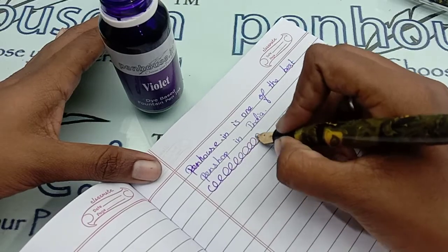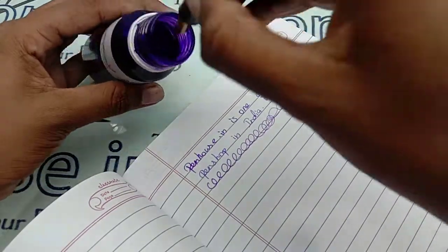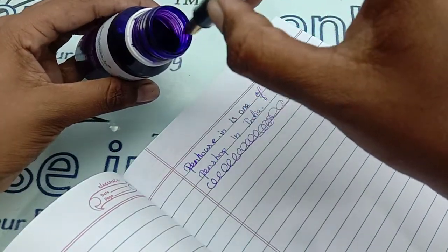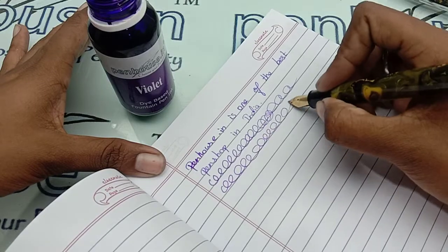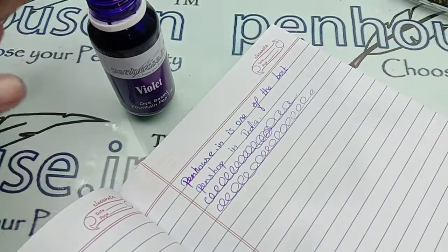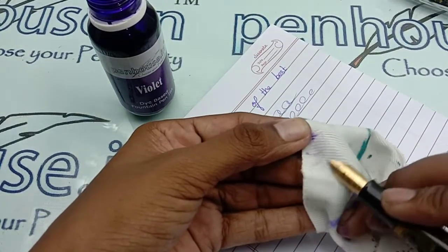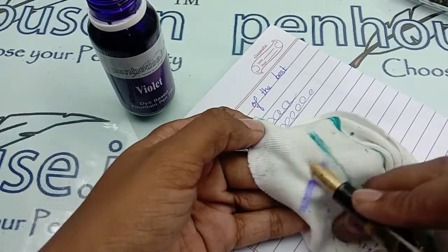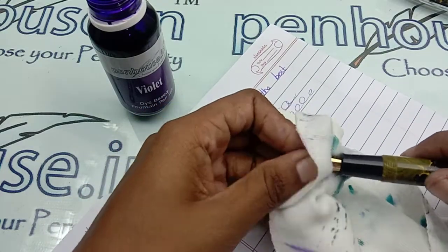Let me show you the fast writing. The ink dries as I'm dipping a little ink and drying here. The fast writing gives a very good flow, equal flow, and there is no problem with the nib. The nib's writing is so smooth.